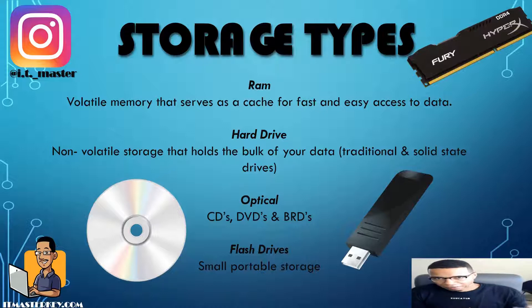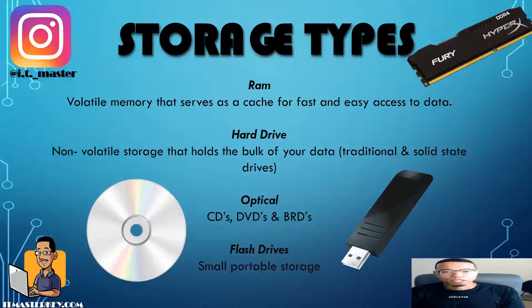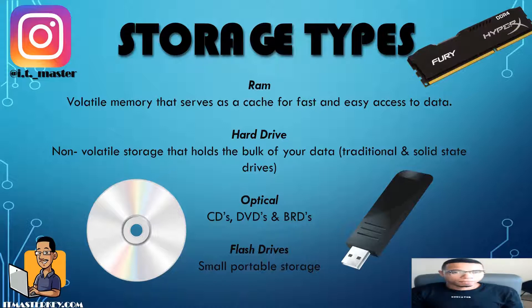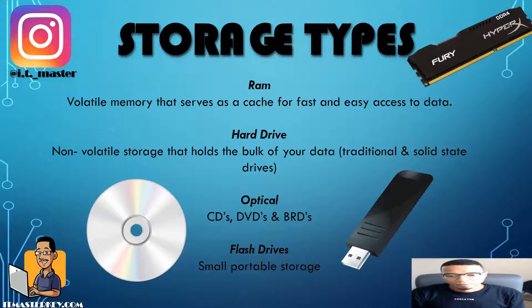Think about it this way: if you've got 16 gigs of RAM and it actually saved stuff every time, every time you got back on the computer you would have less and less available RAM. That's why every time you get on a computer you have that full RAM available for whatever functions you're trying to do right then.